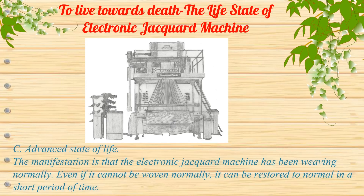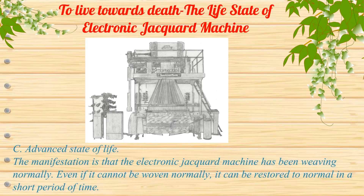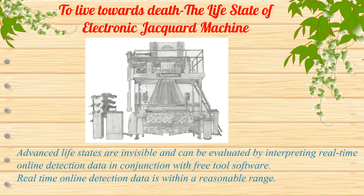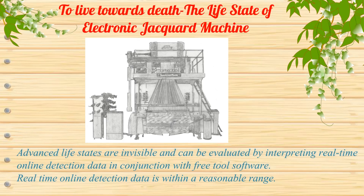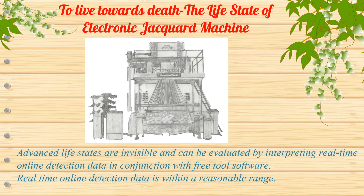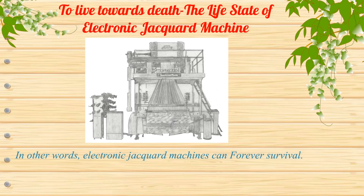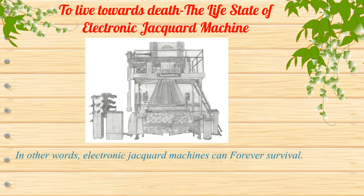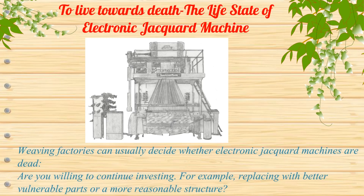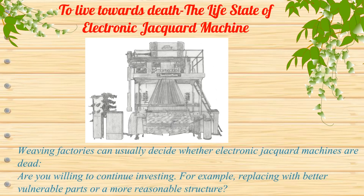C: Advanced state of life. The manifestation is that the electronic jacquard machine has been weaving normally. Even if it cannot weave normally, it can be restored to normal in a short period of time. Advanced life states are invisible and can be evaluated by interpreting real-time online detection data in conjunction with free tool software. Real-time online detection data is within a reasonable range, meaning electronic jacquard machines can survive indefinitely. Weaving factories can decide whether to continue investing — for example, replacing with better vulnerable parts or a more reasonable structure.